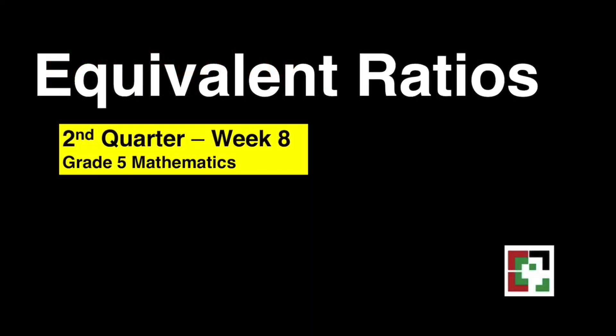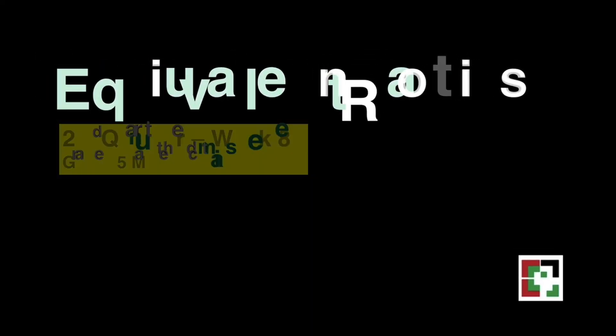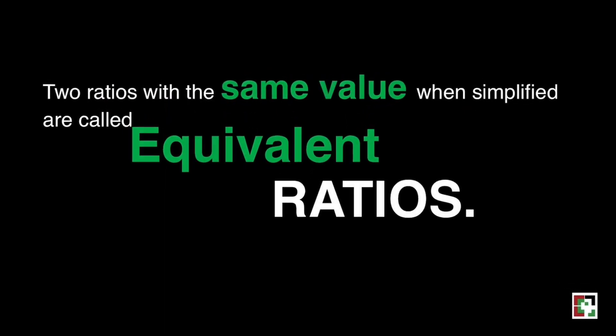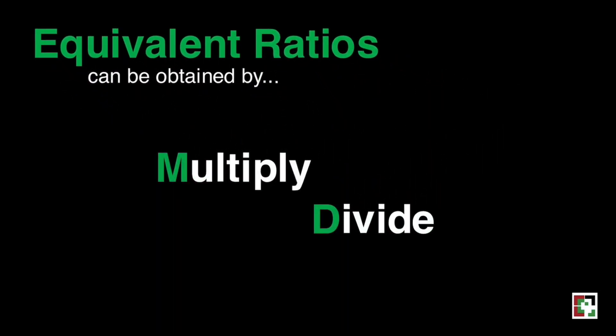This video is all about equivalent ratios. How will we know that two ratios are equivalent? When they have the same value when they are simplified. It has to be in simplest form. We can give an equivalent ratio to a given ratio when we multiply or divide a certain fancy fraction which is equivalent to 1.